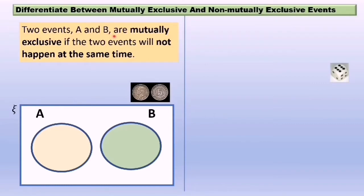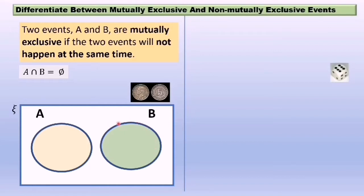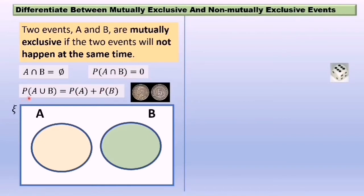Two events A and B are mutually exclusive if the two events will not happen at the same time. For example, the set of outcomes of a single coin toss, which can result in head or tail, but not both. Set A intersect Set B equals the empty set. From the Venn diagram you can see Set A does not intersect Set B. Probability of event A intersect event B equals zero. Probability of event A union event B equals probability of event A plus probability of event B.